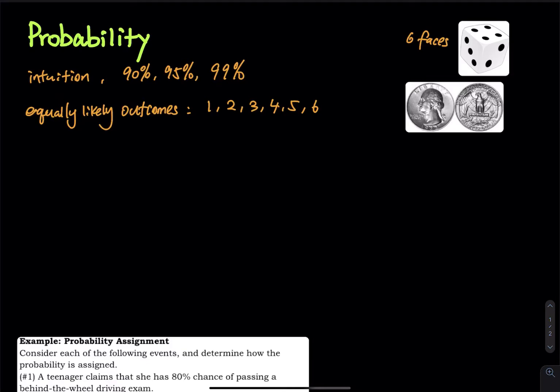Every time you roll a die, you get one number. So the probability is equal to one over six. The probability to get any of these numbers is one over six.